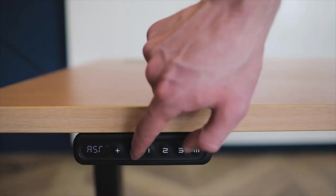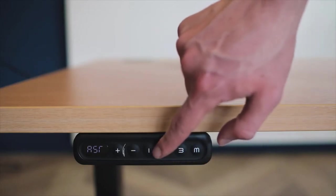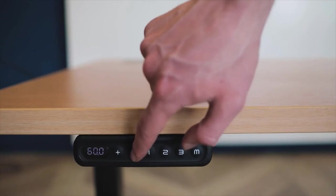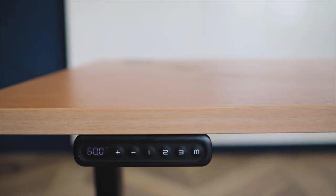Now it's time to reset your control box. You can do this by holding the down arrow until the desk reaches its lowest level. You will see the desk slightly rise after this. You can now let go of the button.